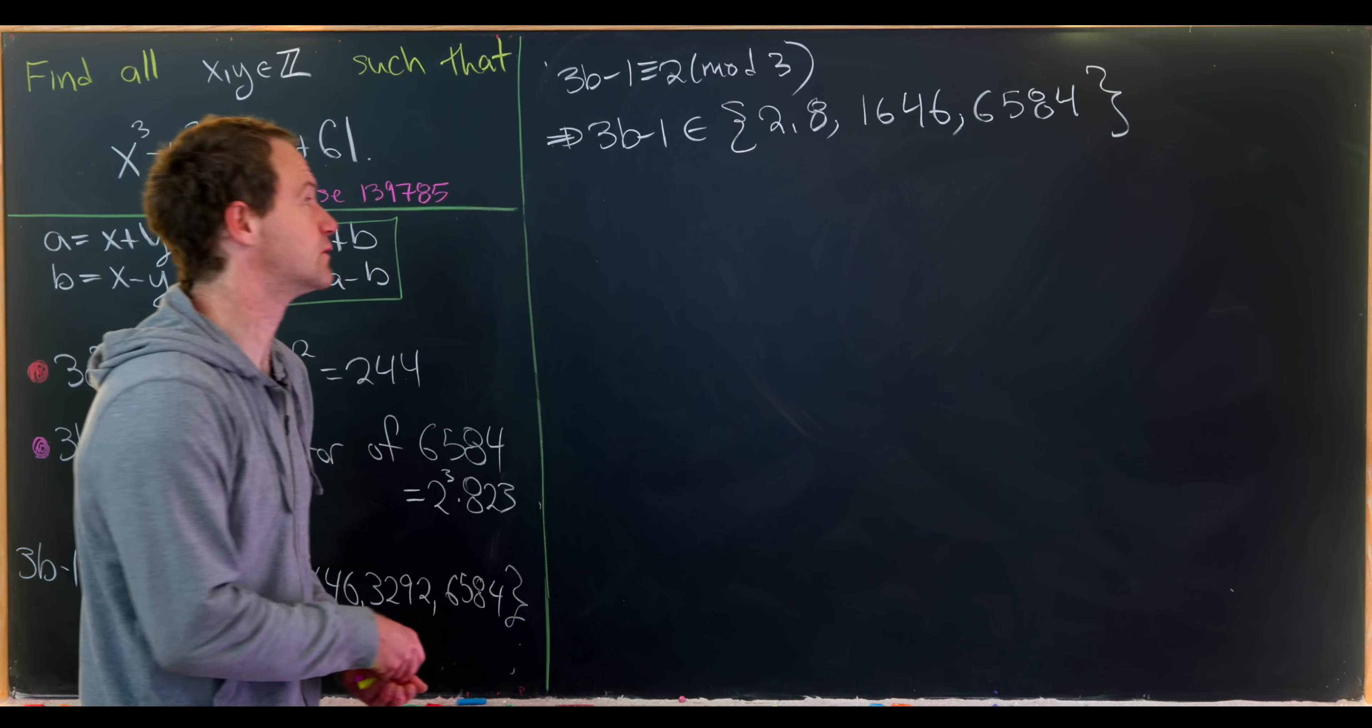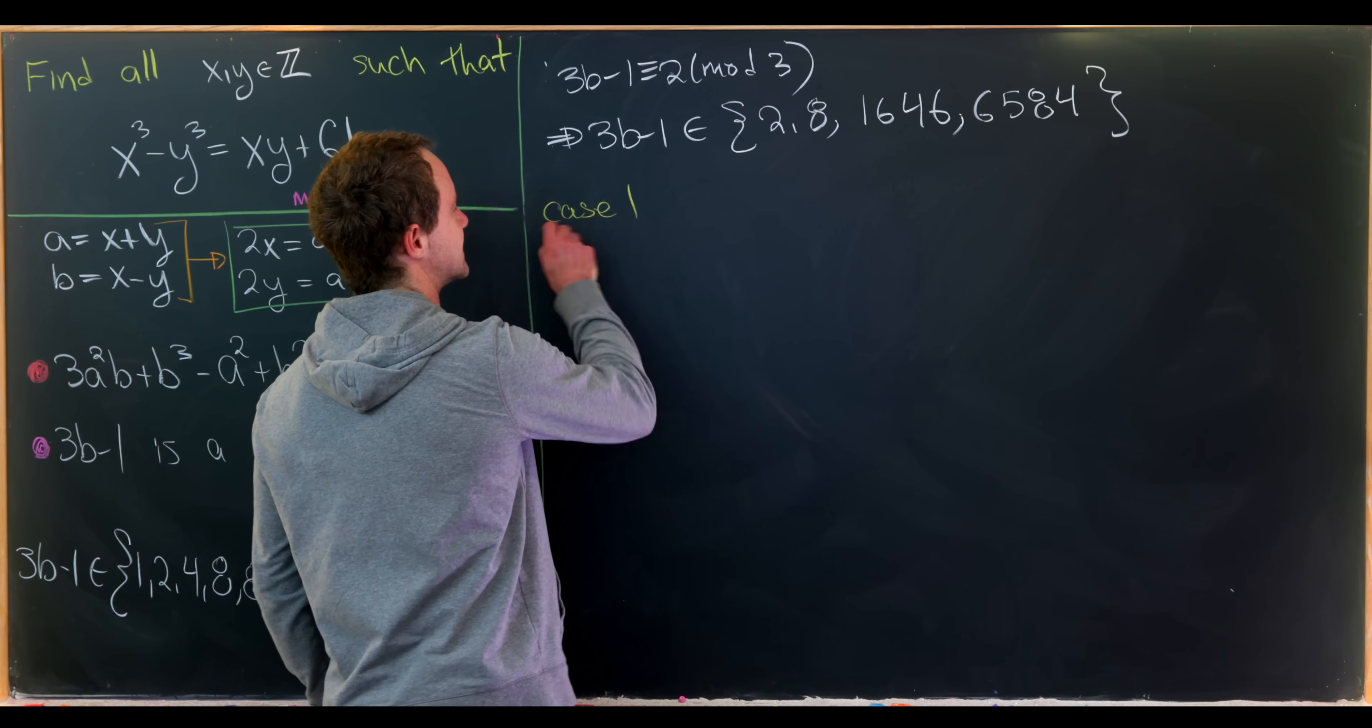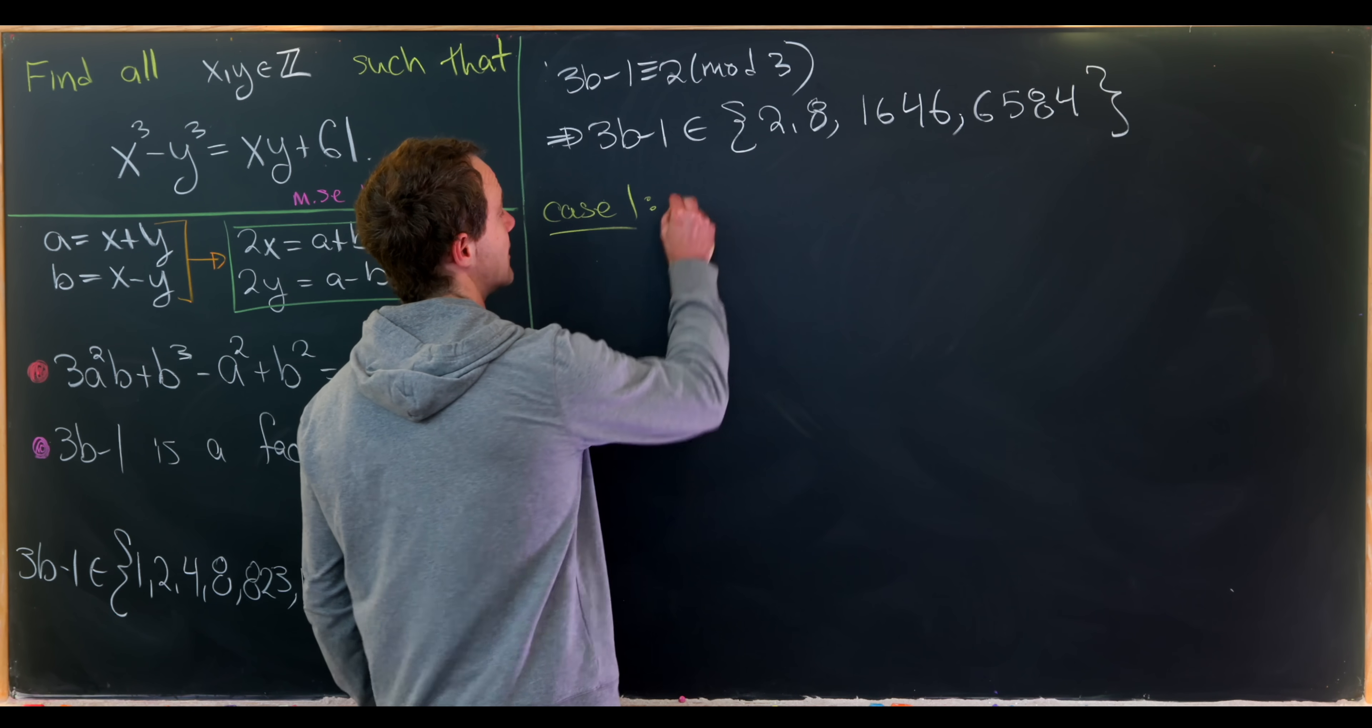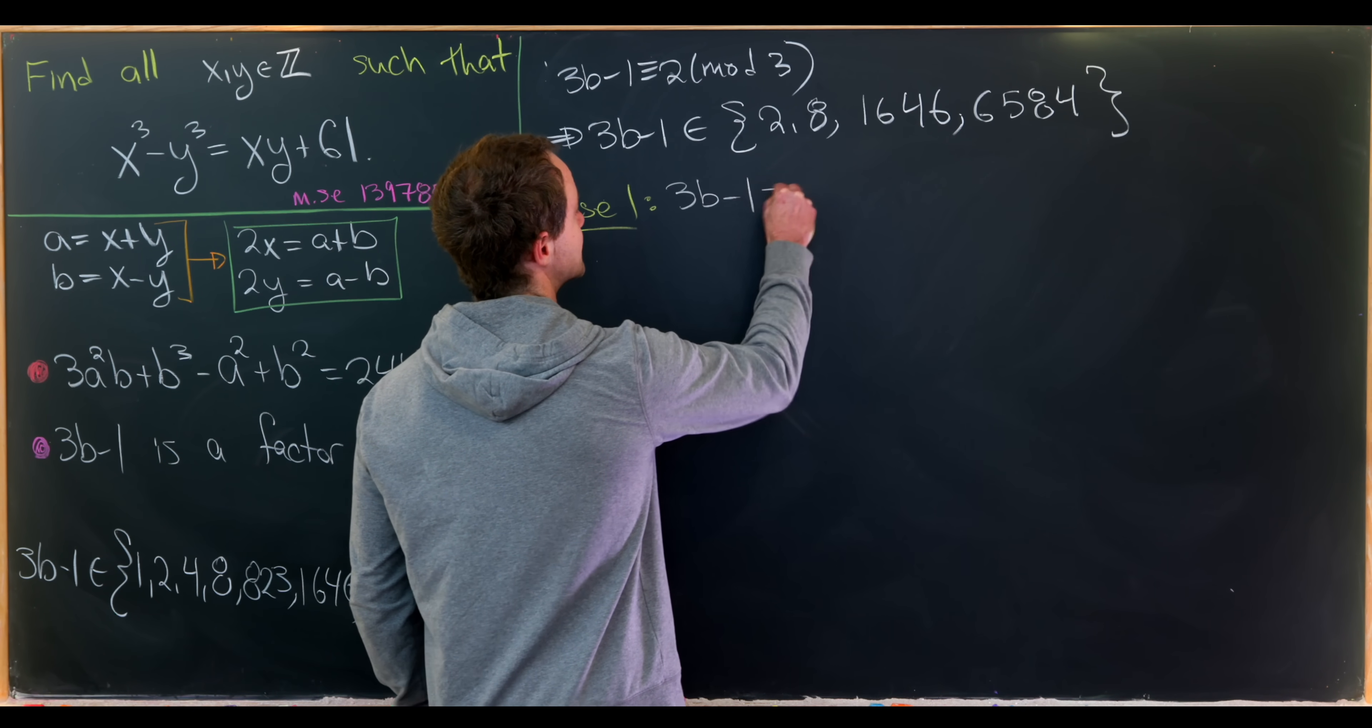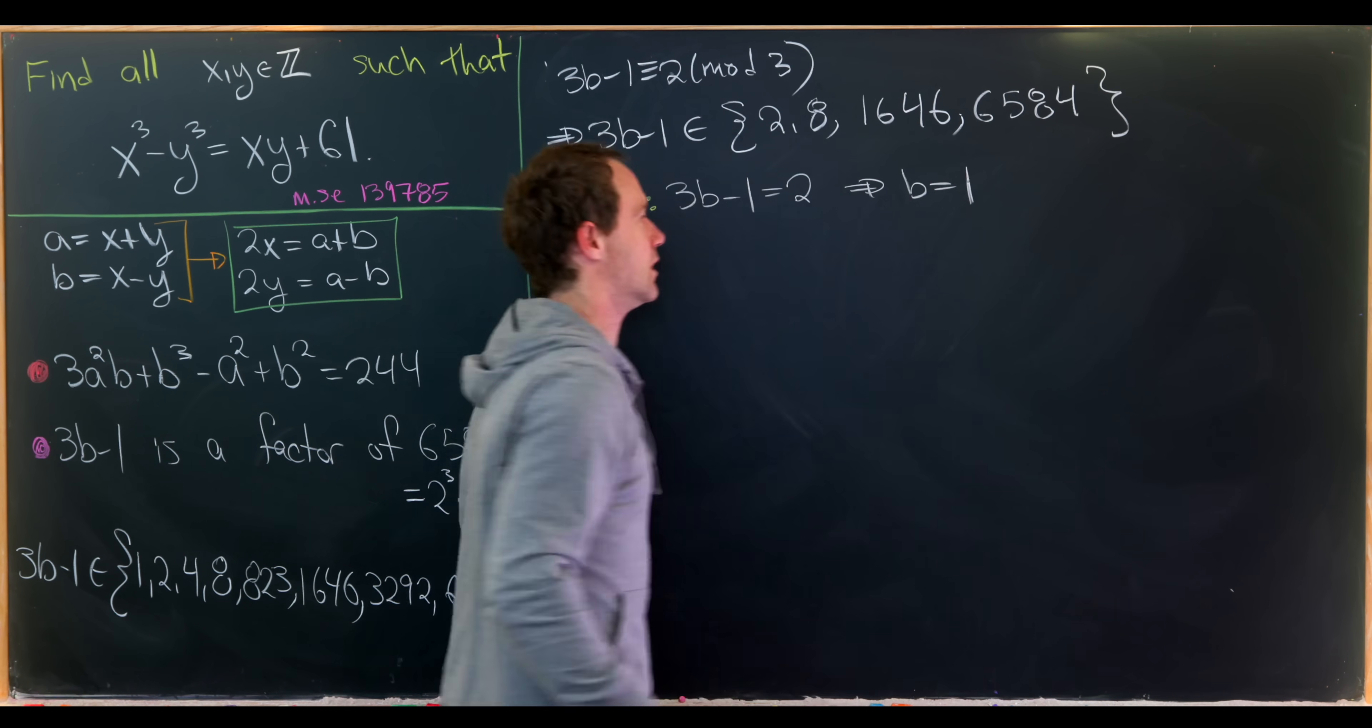Let's look at our first case. Case 1 will be 3b minus 1 equals 2. That tells us that b is equal to 1 pretty clearly.